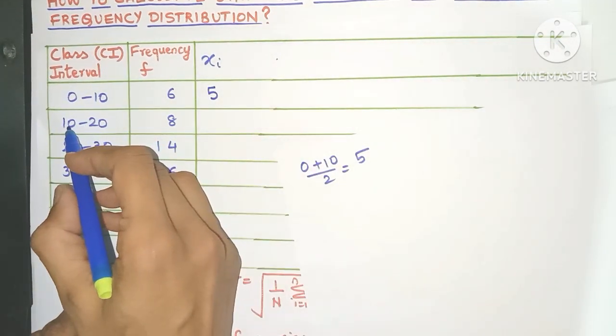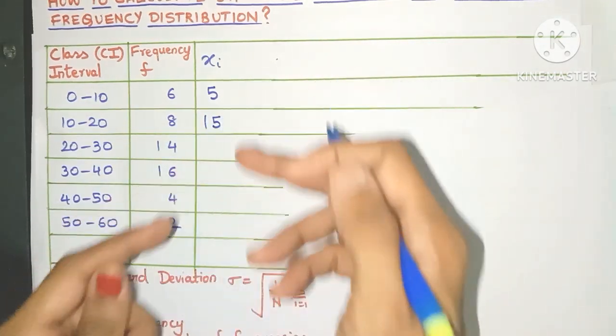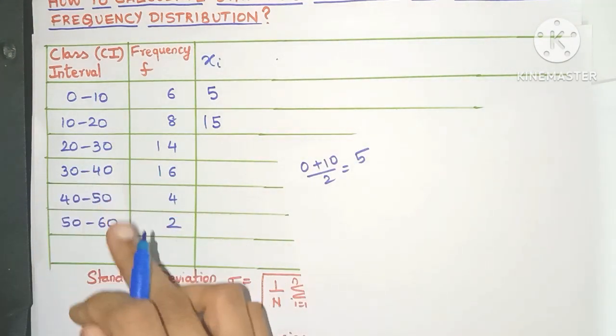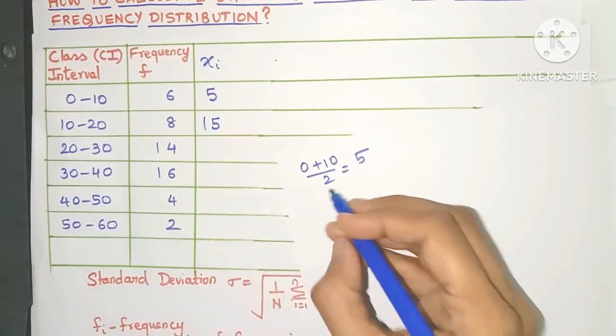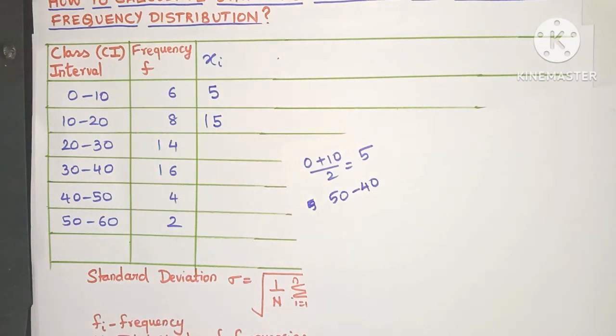So 0 plus 10 divided by 2, which is nothing but 5, and that is the xi value for the first class interval. Now 10 plus 20 divided by 2, which is 15. So this way you can get all the xi values, but there is an easier way. What you need to do is just find the class size. So let's take this class interval, 40 to 50. Just subtract the upper limit and the lower limit. So we will get 10, that is the class size.